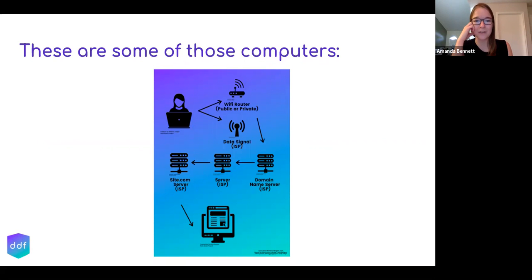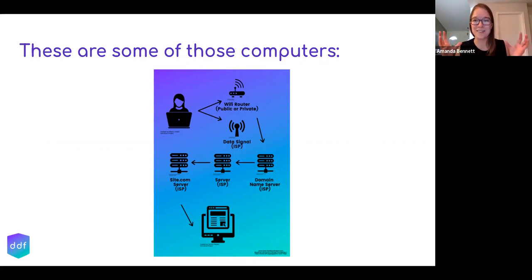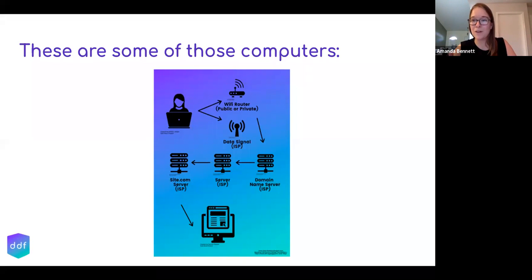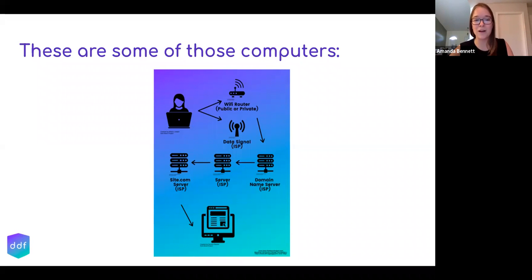You might either talk to a wifi router or a cell phone tower releasing data signals. You'll talk to a domain name server, which is the computer that translates the website from something like google.com to numbers called IP addresses — that's how the internet locates things. That domain name server is owned by your internet service provider (ISP), which will route your request to a server owned by the ISP, then to another server owned by Google, and then you'll see Google. All of these computers are behind the scenes when you're surfing the internet.